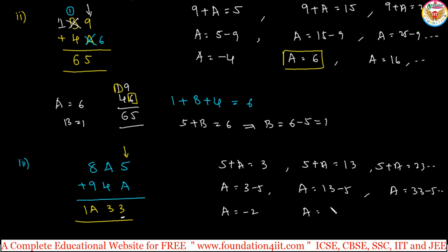From this, A is equals to minus 2, or A is equals to 13 minus 5, 8, or A is equal to 18, so on. A must be single digit, so that is only this place, not negative, not more than one digit, so A is equal to 8, it will satisfy.